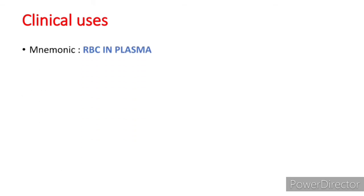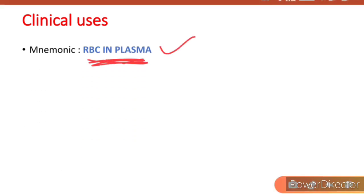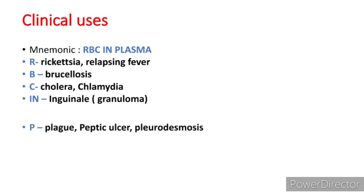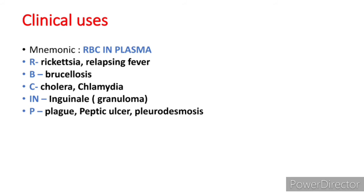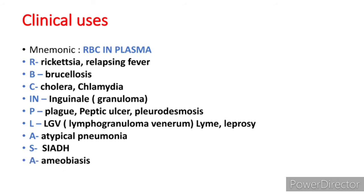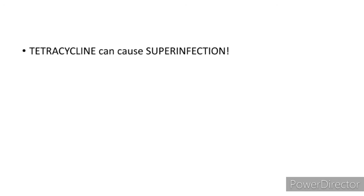For clinical uses, here is an easy mnemonic: 'RBC in plasma.' Tetracyclines are given for Rickettsia and relapsing fever; Brucellosis, Cholera, and Chlamydia; Granuloma inguinale; Plague, Peptic ulcer, and Pleurodesis; LGV (lymphogranuloma venereum); Lyme disease and Leprosy; Atypical pneumonia; and SIADH — syndrome of inappropriate antidiuretic hormone secretion — and amoebiasis.